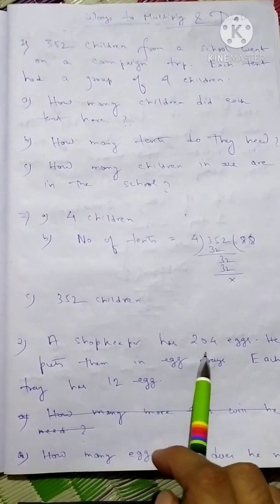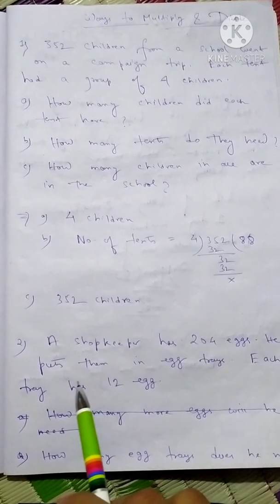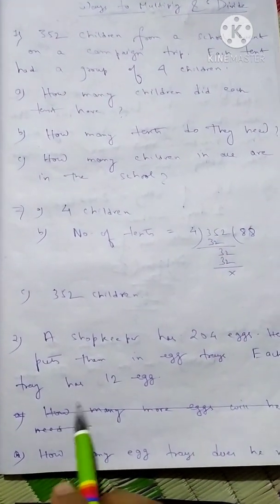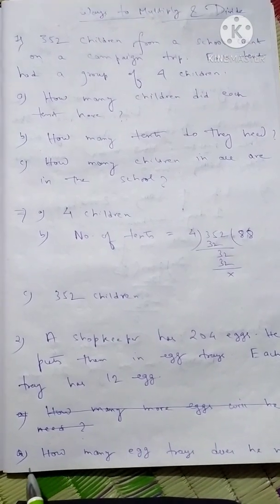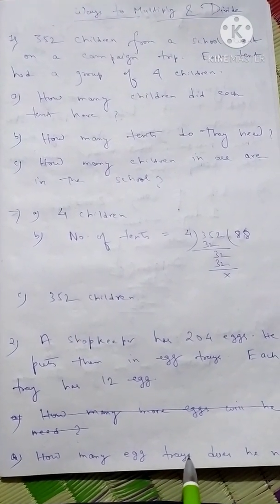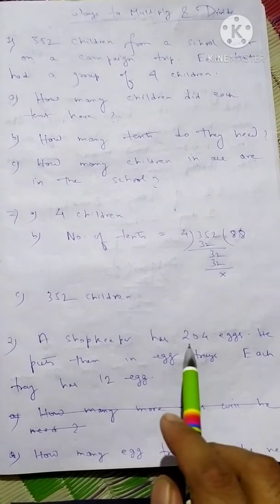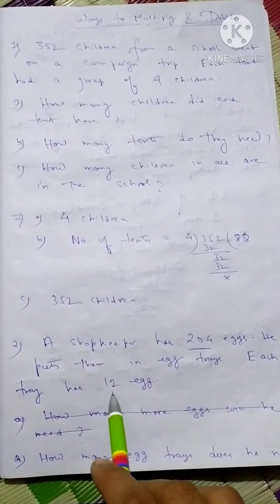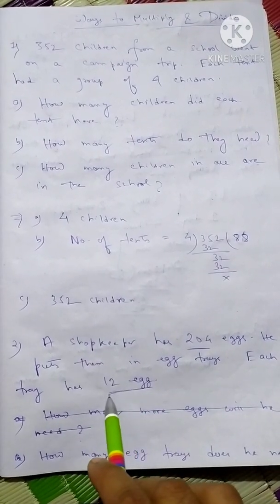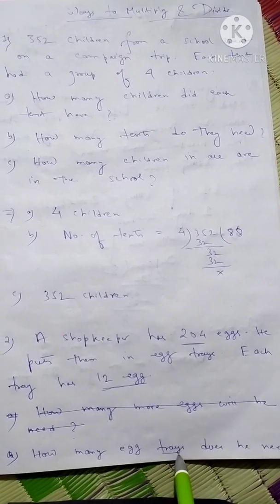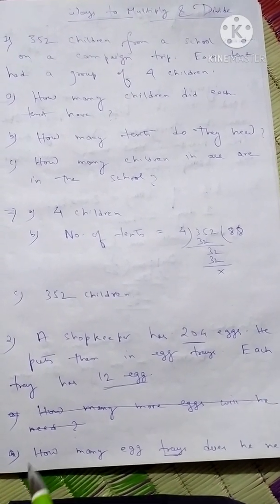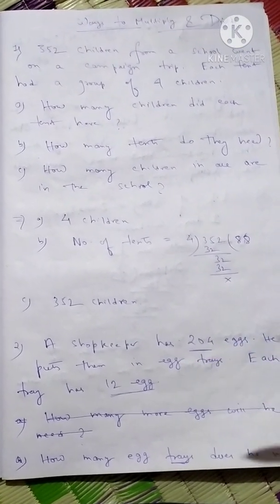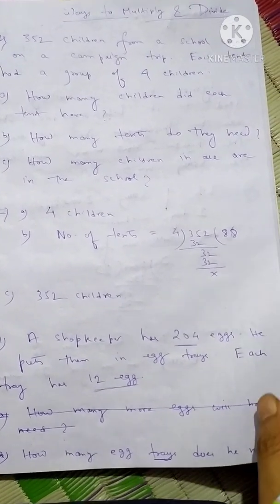Question two: a shopkeeper has 204 eggs and puts them in egg trays — you have seen the trays where eggs are put. Each tray holds 12 eggs. The question is: how many egg trays does he need? So total eggs are 204, each tray holds 12 eggs. To find the number of trays, we divide 204 by 12, which I have worked out on the next page.